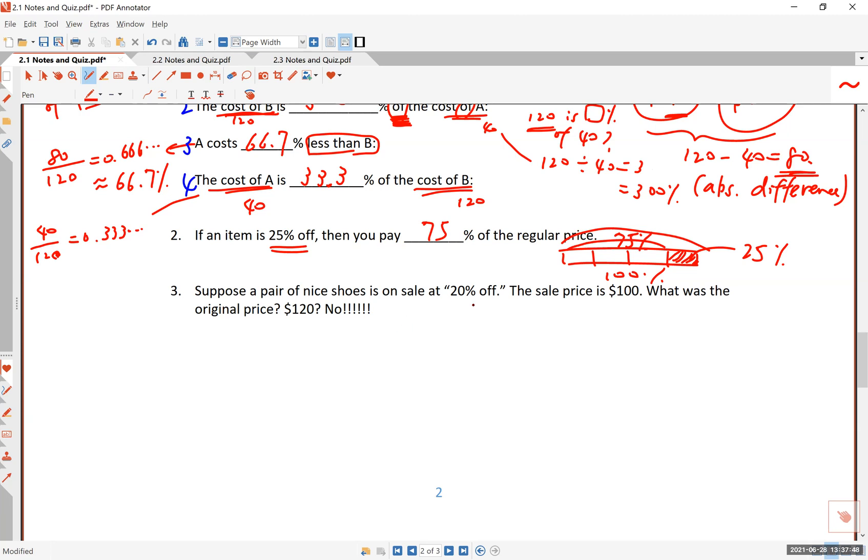Suppose a pair of nice shoes is on sale at 20% off. Sounds familiar, right? The sale price is $100. What was the original price? So it says 20, you know, you have a pair of shoes here, you know, whatever. And you like it, and there's a price tag, and it says, well, it's 20% off sale. And the price tag is after the sale, you say, well, $100. Do I get 20% off of the $100? And the answer is no, no, no, no. This is already after the 20%. It's the price after the 20% has been taken off. So what is the regular price, right?